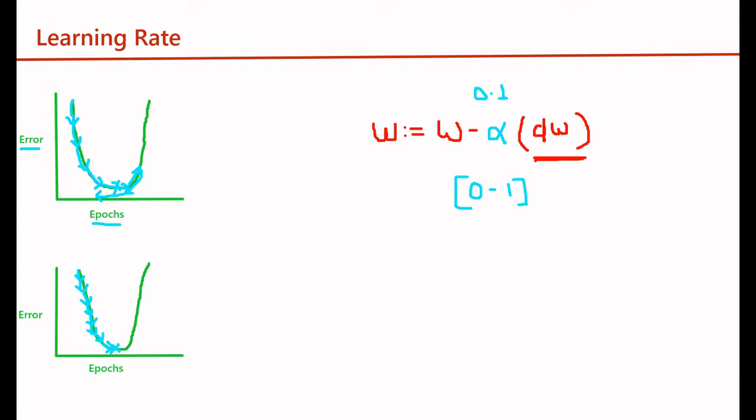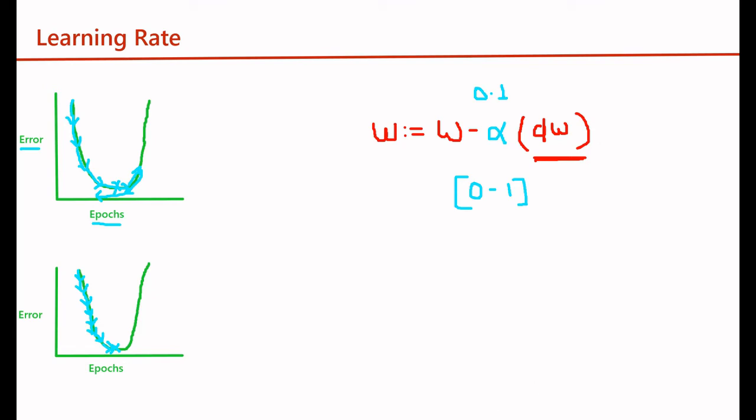Now let's see how to include this learning rate in our model. This was the previous setup for our model. We created our model and used the stochastic gradient descent algorithm to update the weights.